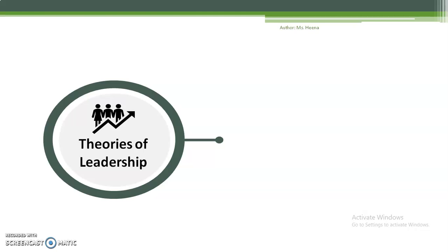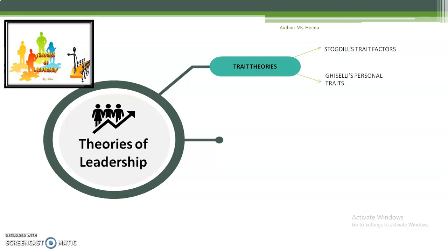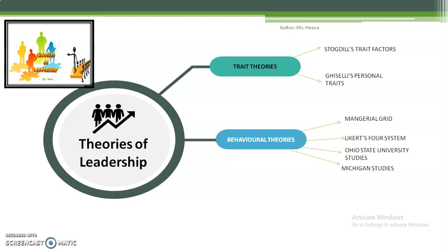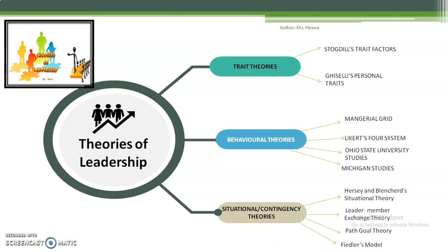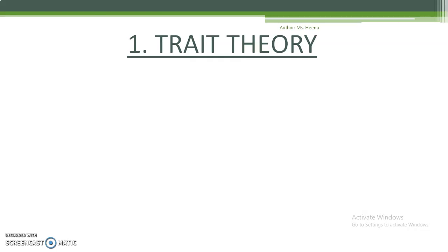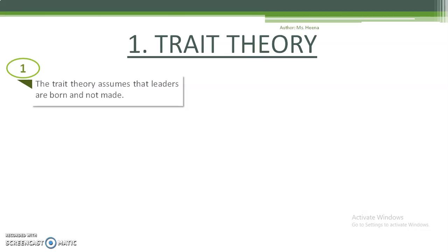There are different theories of leadership. The first is trait theories, given by different authors. The second theory is behavioral theory — including the managerial grid, Likert's fourth system, and concepts from various authors. Finally, situational theories or contingency theories also have different concepts contributed by various authors.